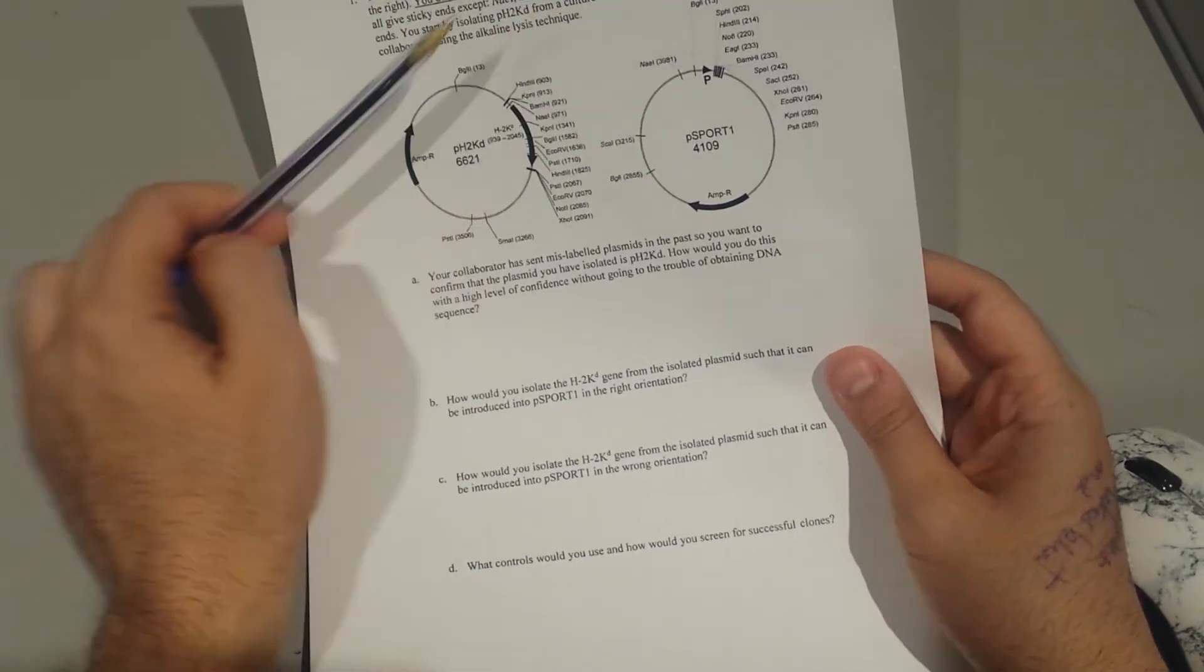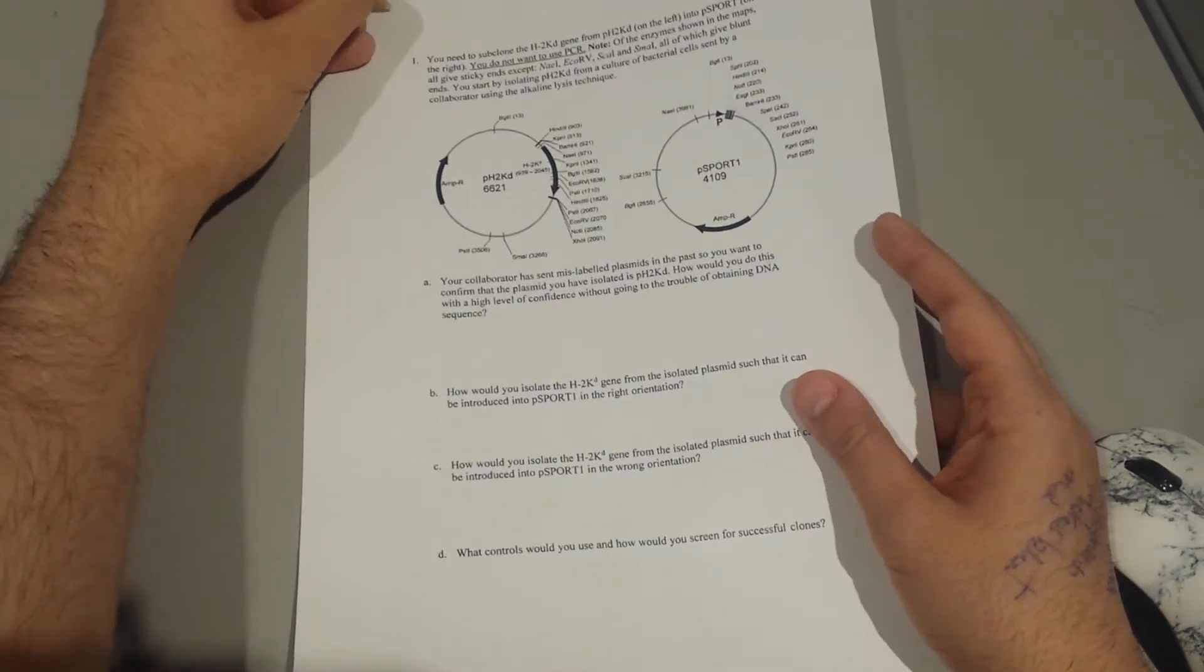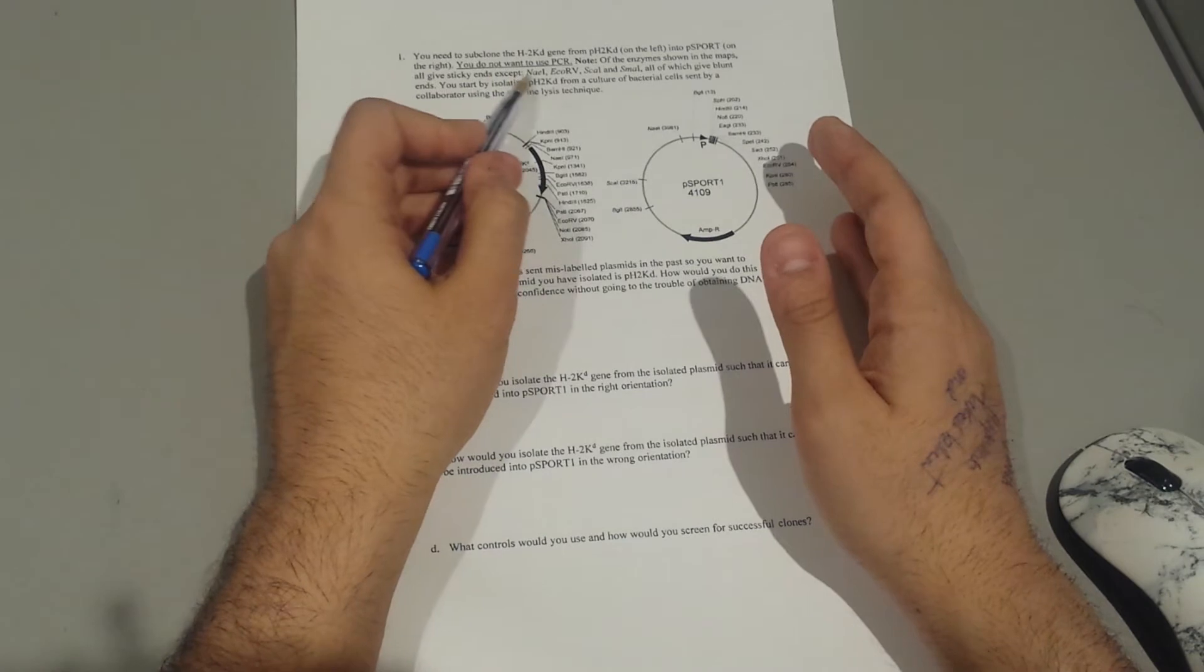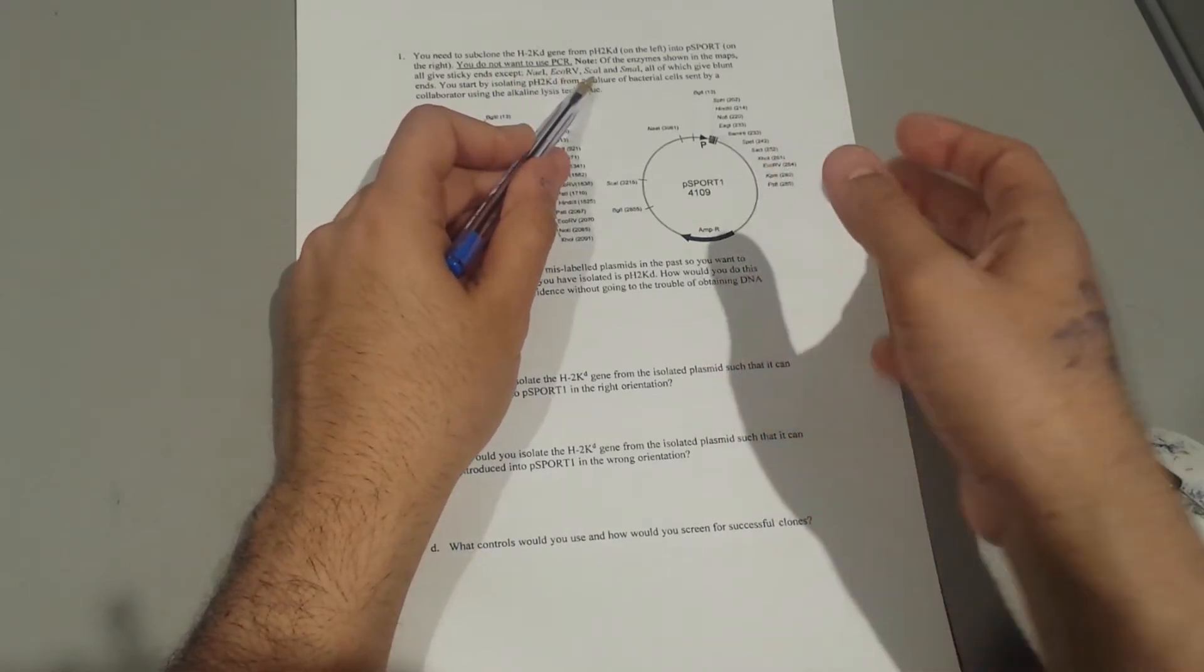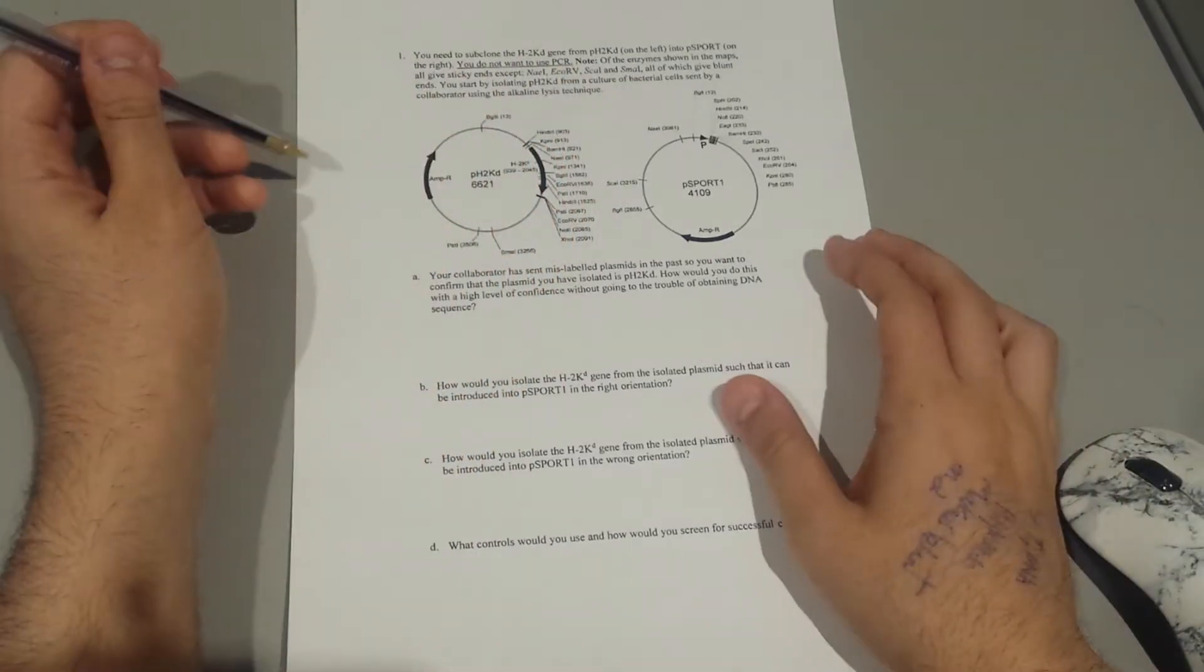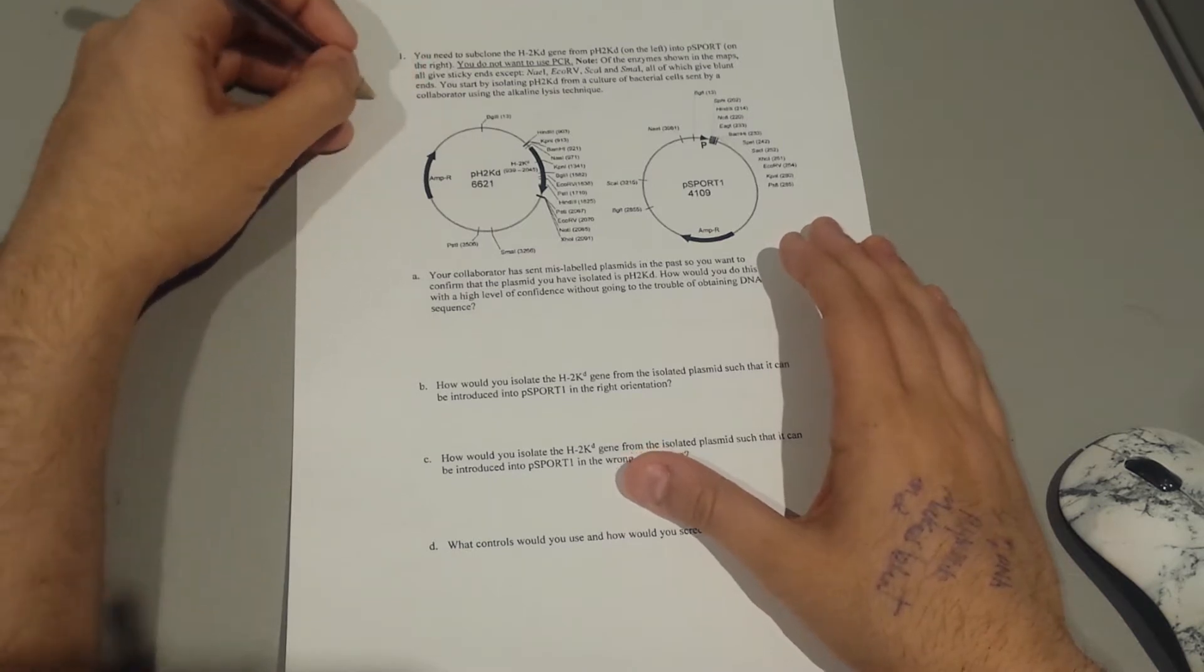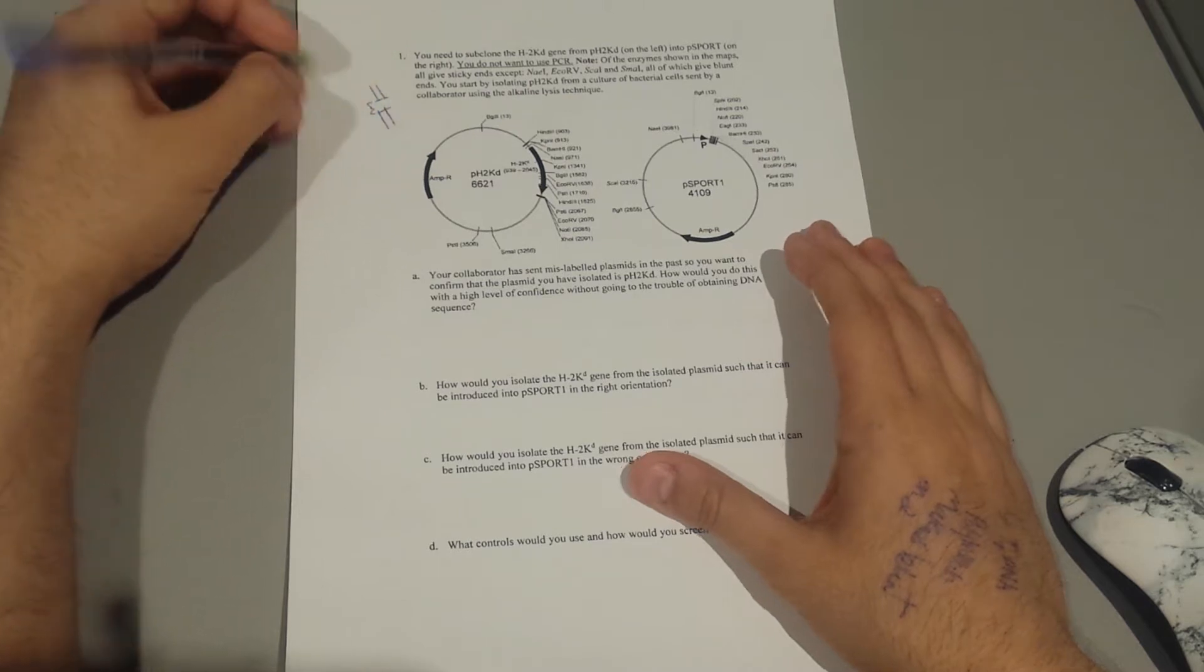Of the enzymes shown in the maps, all give you sticky ends except NAE1, EcoRV, SKA1, and SmaI that give you blunt ends. Whenever they cut, they cut like this, leaving us the blunt ends.